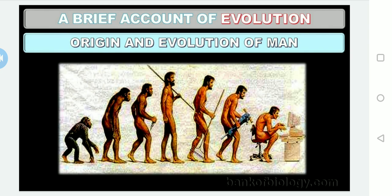Fossil evidence indicates that human beings originated first in East Africa. The gradual evolution of man from an ape ancestor is fully supported by fossils. To study the evolutionary tree of man, the fossils are arranged in the order: ancestral ape, ape man, primitive man, and modern man. Let us study each one by one.